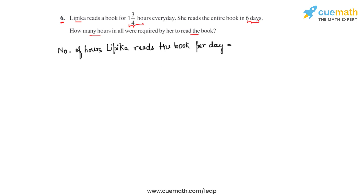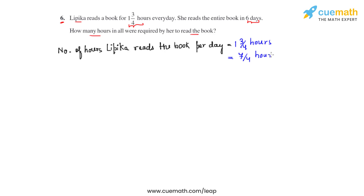Lipika reads the book per day, and from the question we can see that is 1¾ hours every day. Converting this into an improper fraction, we write it as 4 times 1 plus 3, which is 7, so 7/4 hours per day.